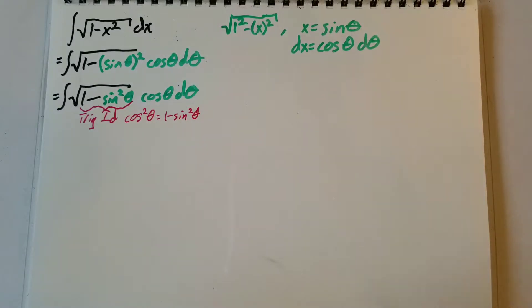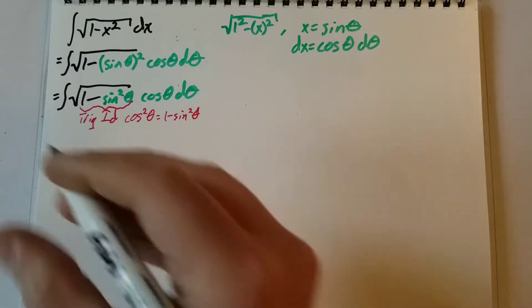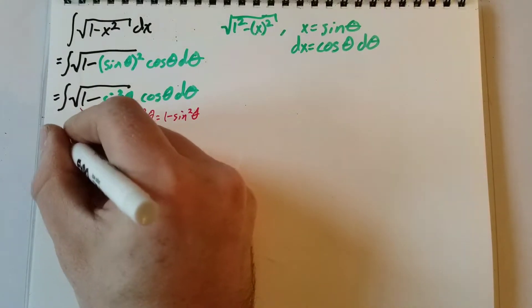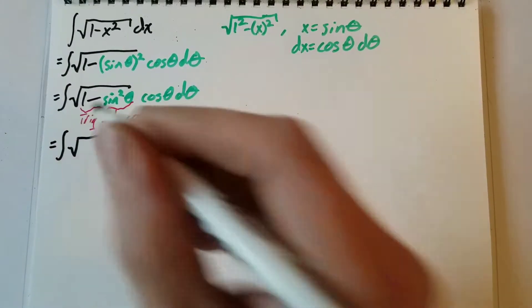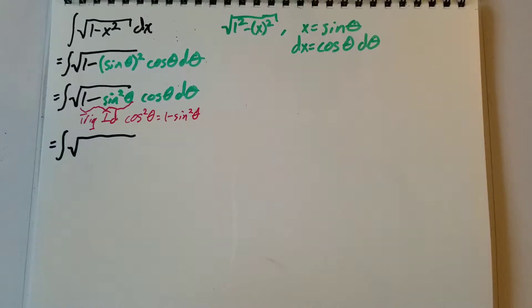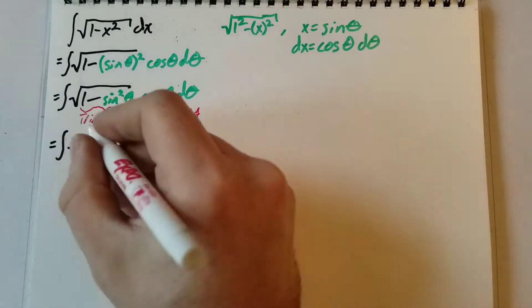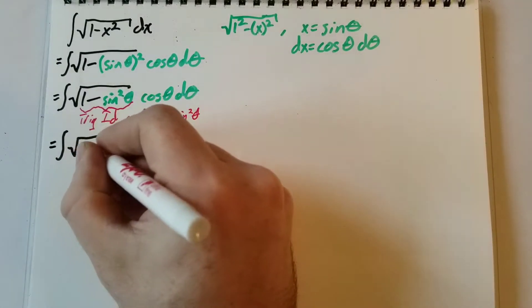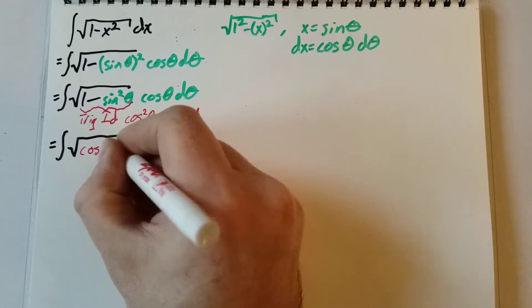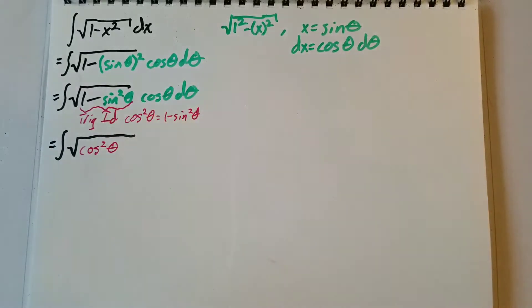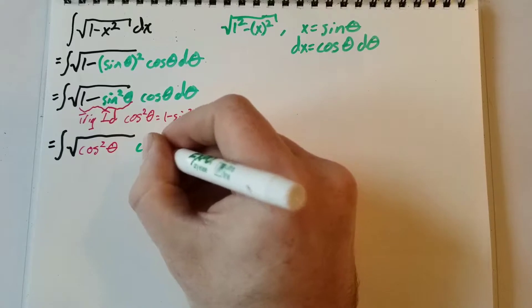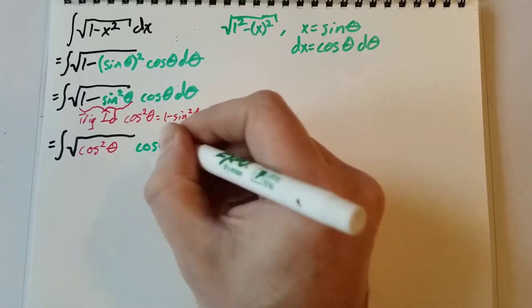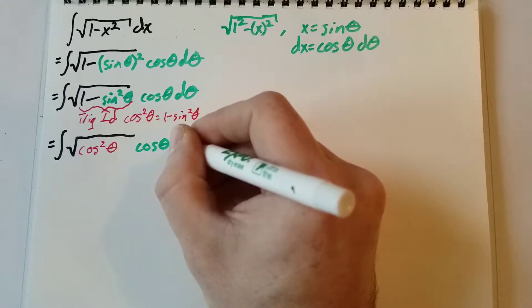So the whole radical can be rewritten. We now have the integral of the square root of cosine squared theta, times cosine theta d theta.